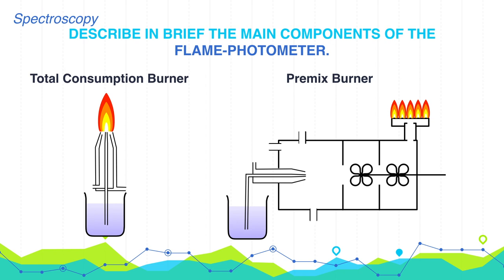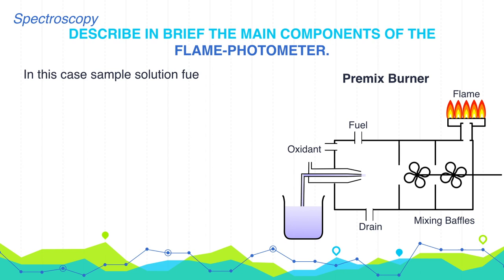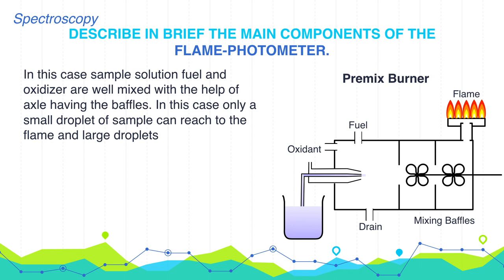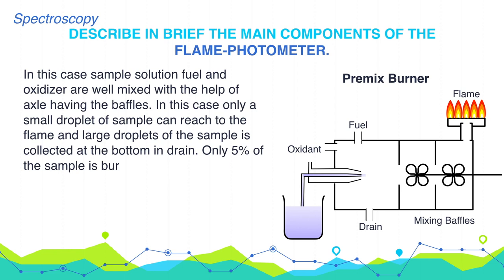Now let's talk about another type of burner, that is premix burner. In this case, sample solution, fuel, and oxidizer are well mixed with the help of an axle having baffles. Only small droplets of sample can reach the flame, and large droplets are collected at the bottom in drain. Only 5% of the sample is burnt, whereas 95% is condensed and drained out.